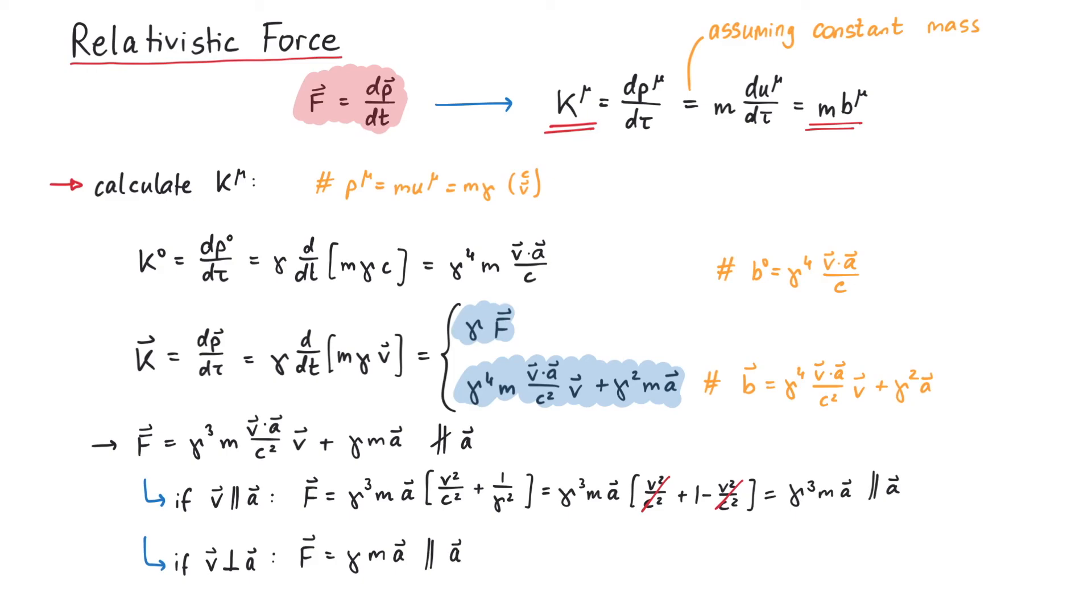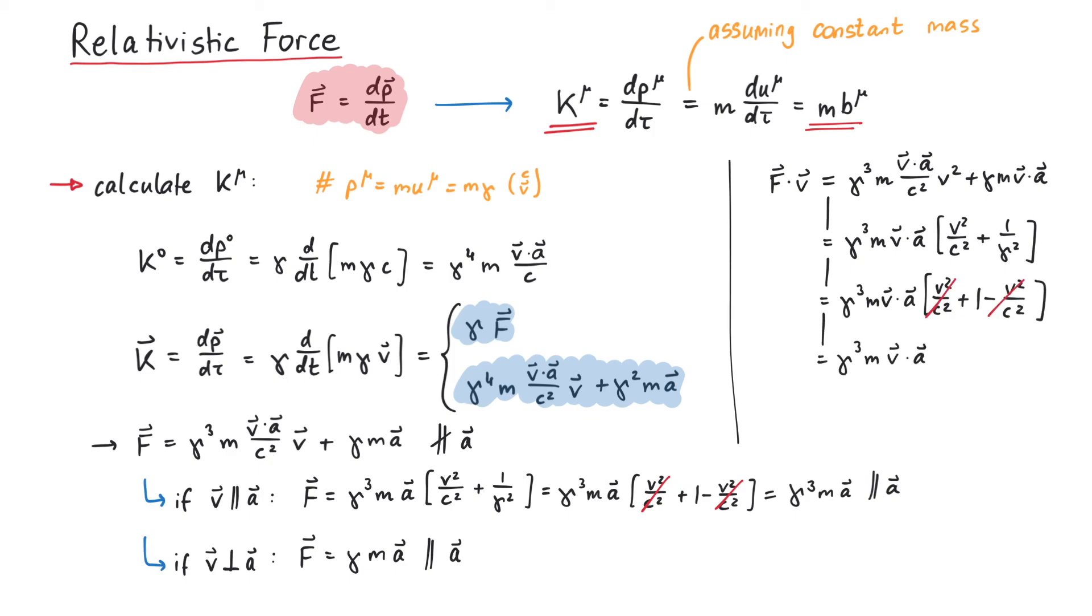Before we end this video, take a look at the following expression: the inner product of 3-force f with 3-velocity v. By simplifying this expression and comparing it to the zero component of k mu, we see that k0 can also be written as gamma over c, f times v.